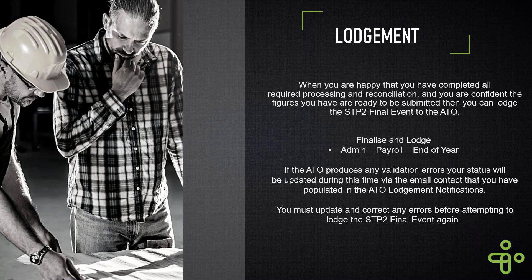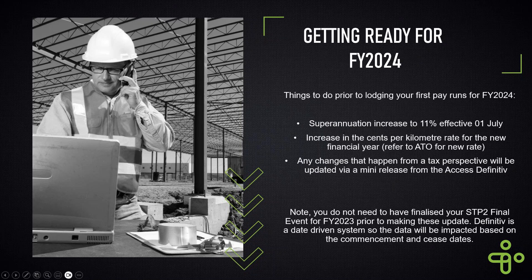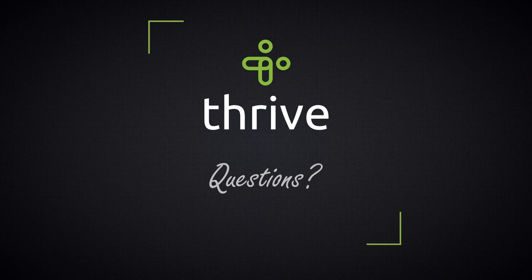Lodgements are very simply found under your payroll tab as end of year lodgements. It's very much like publishing your STP every week - you just tick the box and declare. Make sure you have the email alert on so that notifications come back into your inbox. For any amendments following the final event, please reach out to us as there could be many different error messages. Getting ready for 2024 is very straightforward and you can get it done in advance.